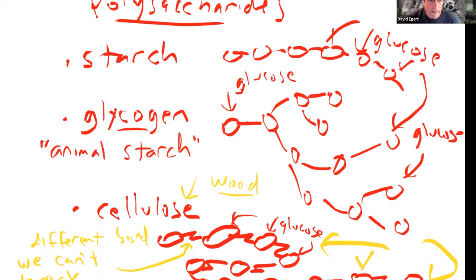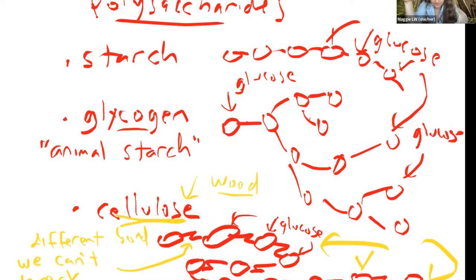Cellulose is the fiber or roughage in your digestive tract that forms the bulk of your food and is important to keep things moving. No animals have the enzyme themselves, but some animals have bacteria that can break down the cellulose.